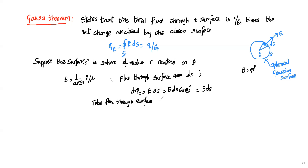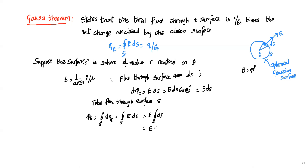Now the total flux through surface S: phi E is equal to the closed surface integral of d phi E. Since d phi E equals E dot ds, this becomes E times the closed integral of ds, which means E into the total surface area.